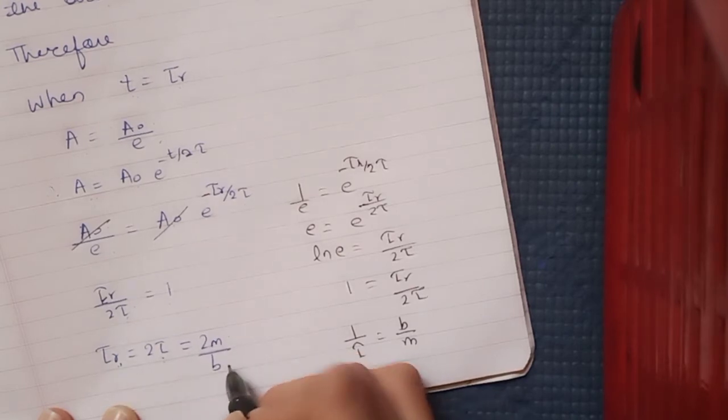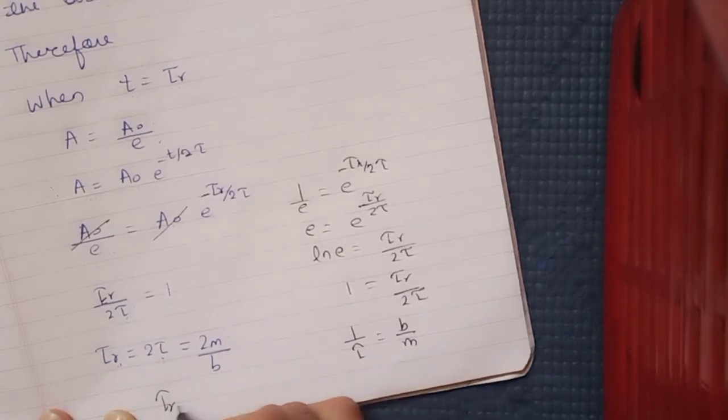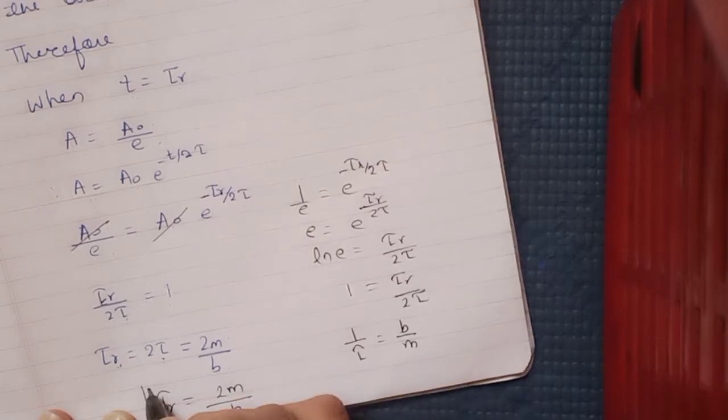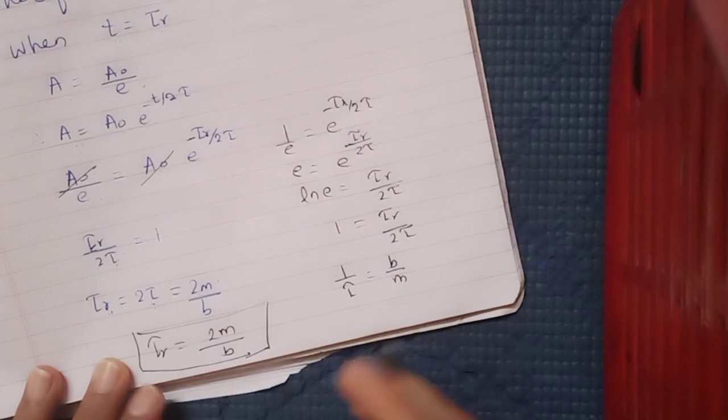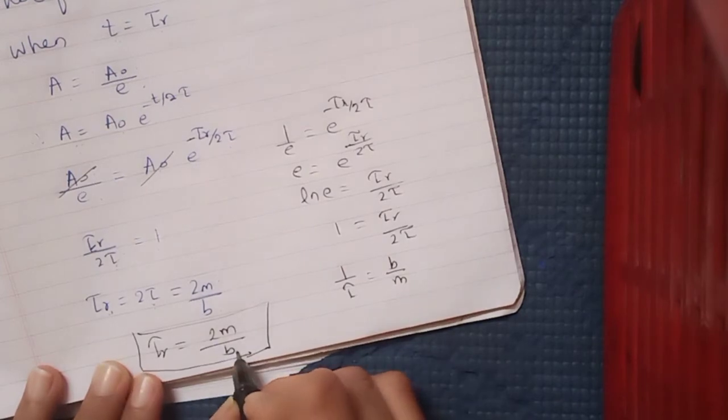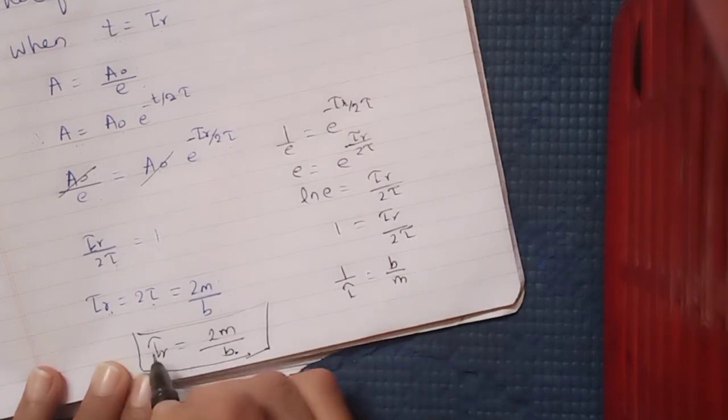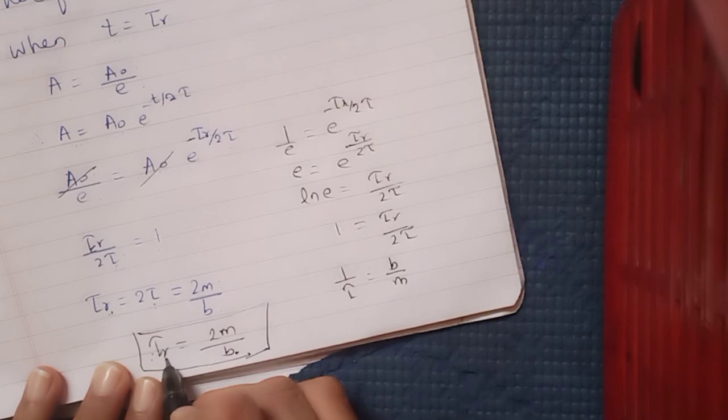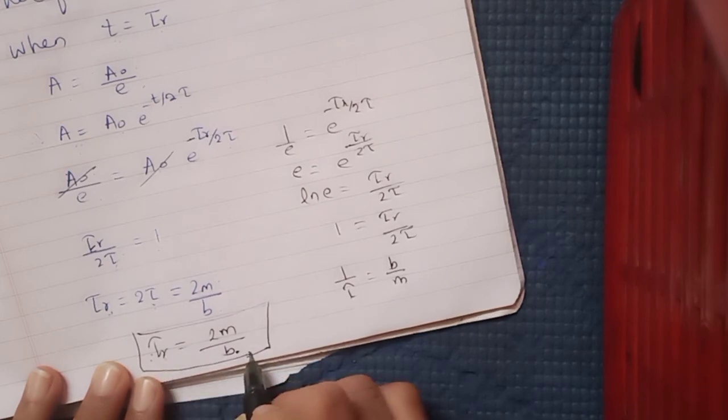What can we infer from this? Remember that b is the damping constant. If damping constant is small, relaxation time is large; if damping constant is large, relaxation time is small. That means relaxation time is inversely proportional to damping constant b.